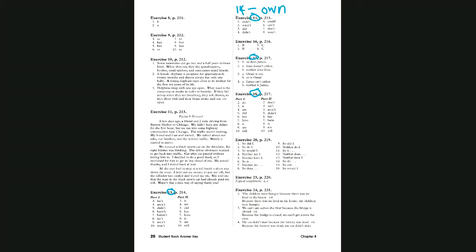Number four: 'aren't.' Number five: 'didn't.' Number six: 'hasn't.' Did anybody miss numbers three, four, or five? Number five is kind of tricky, but everyone seems to have it. Let's keep going.